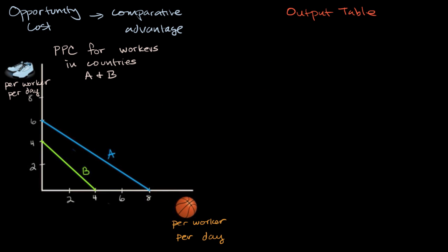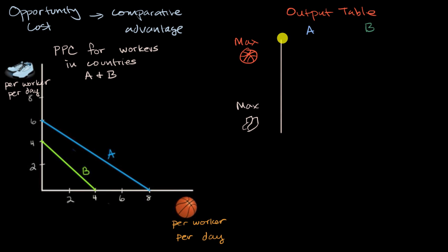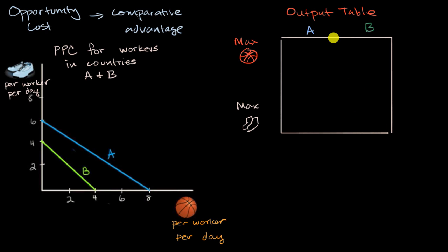In an output table, we would look at country A and country B, and think about what is the maximum basketballs — all per worker, per day — and also what is the maximum shoes per worker per day. I encourage you to pause this video and see if you can fill in this chart: what is the maximum basketballs per worker per day in country A and country B, and then do the same thing for shoes.